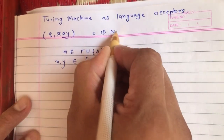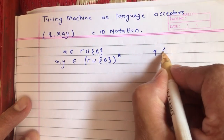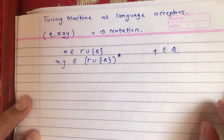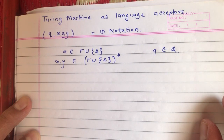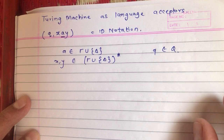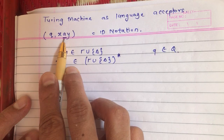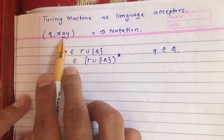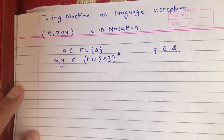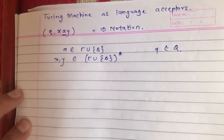In the ID notation, Q represents the current state. x and y are strings based on the tape alphabets, and A is a single symbol from the tape alphabet. The underline indicates that the tape head is currently pointing to symbol A. Now using this, let us write the acceptance definition for a Turing machine as a language acceptor.